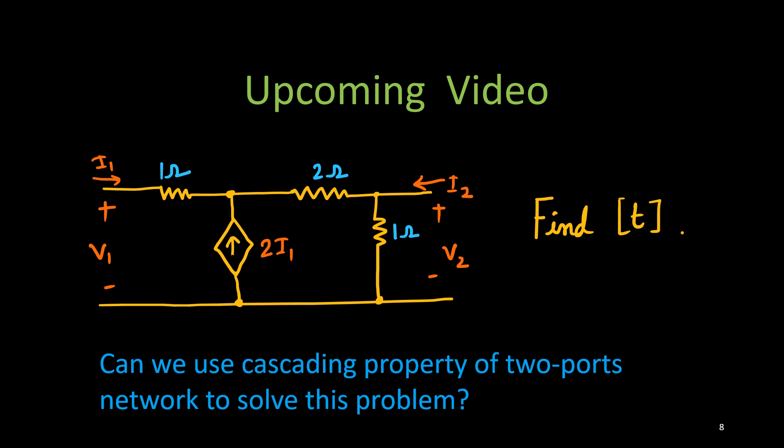And in the upcoming video look at the problem. This figure contains one dependent source, the current dependent current source, this is the circuit. And can you solve this problem, can you find T parameters for this problem? And moreover can you use cascading property of two-point network to solve this problem? That's an interesting problem, interesting question. That will address in the next video.